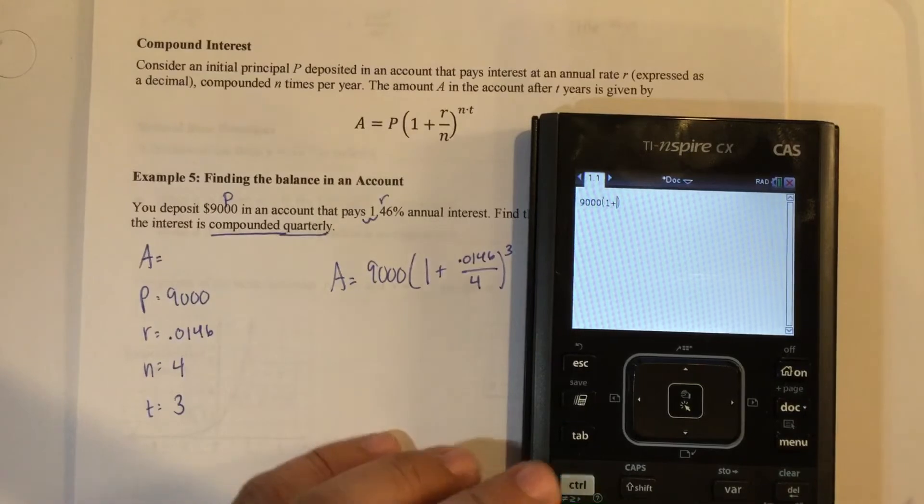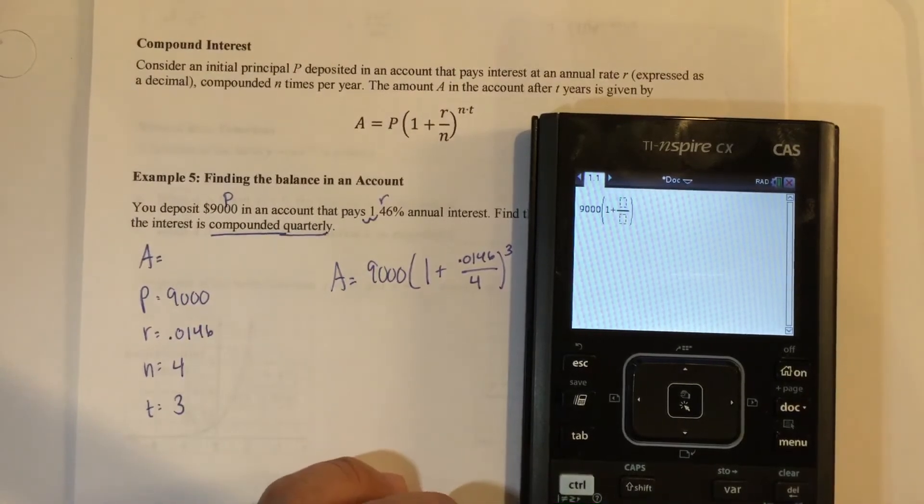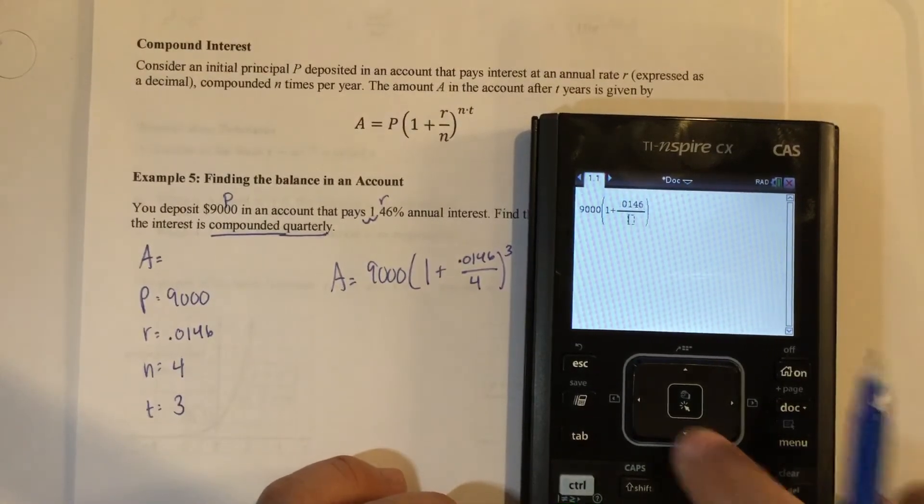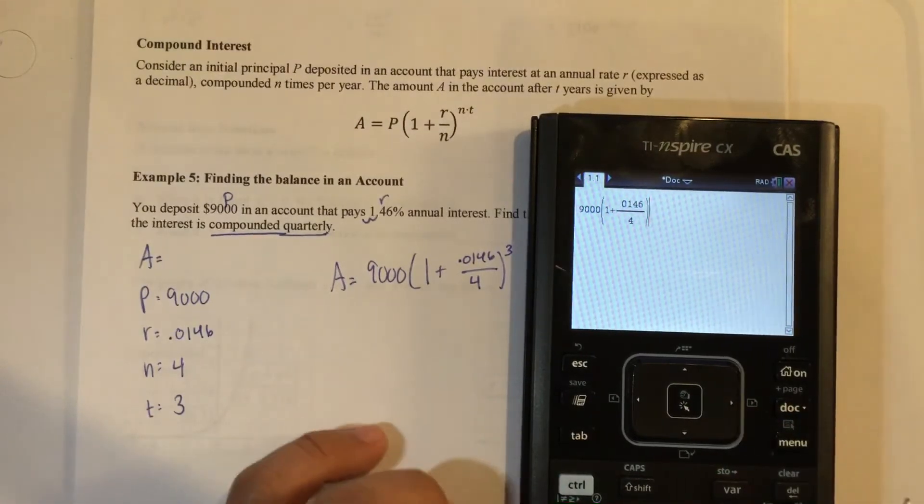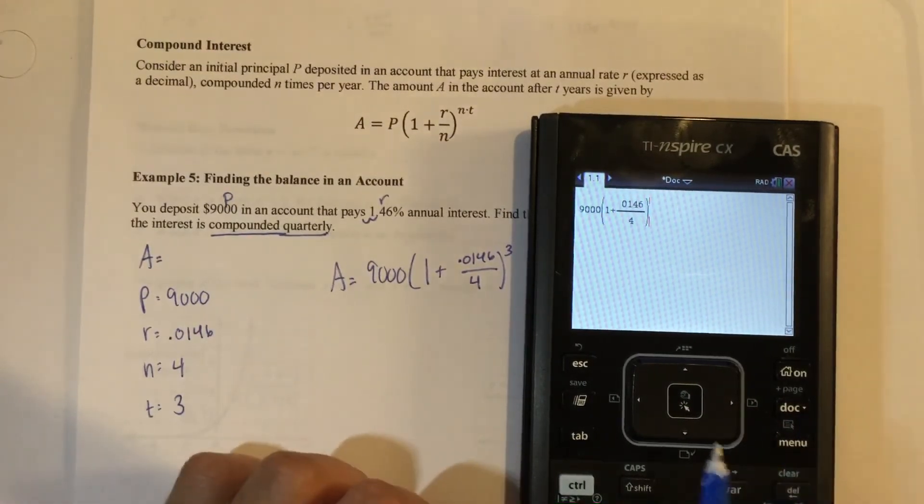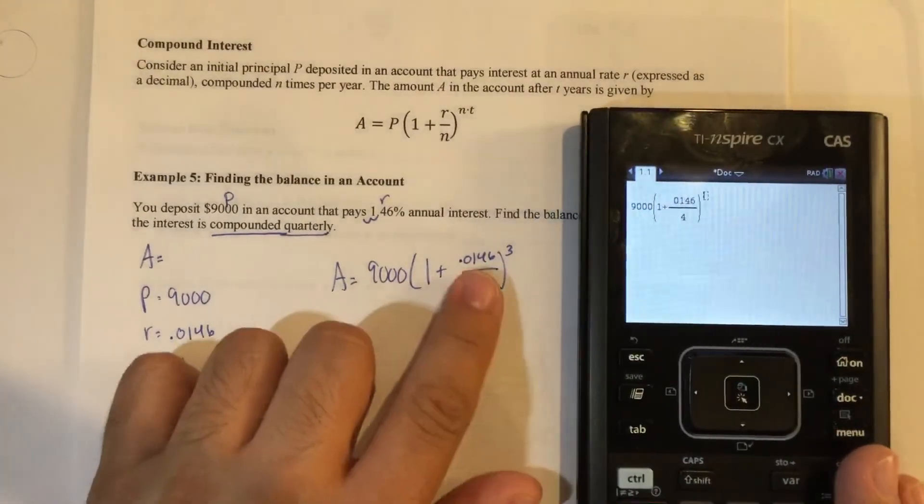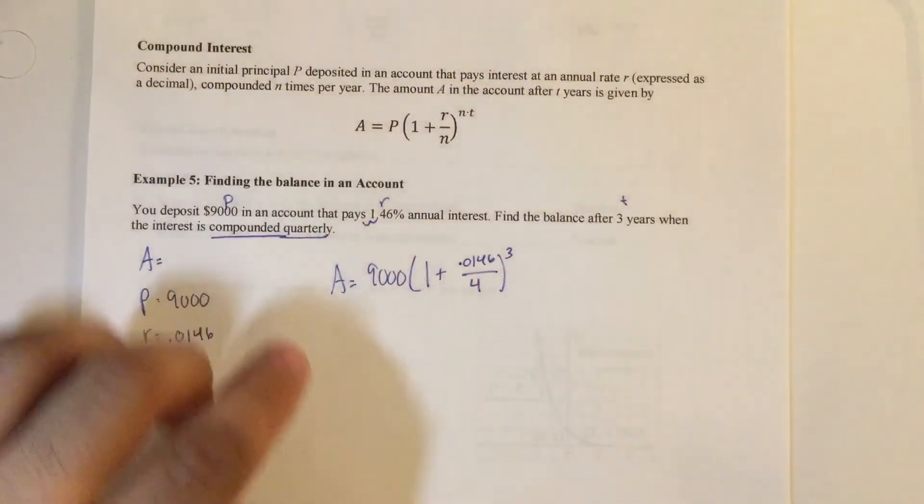one plus, control divide, 0.0146, arrow down, four, arrow out to make sure the parentheses is there, too many, carat. And we have—so I almost made a mistake there.